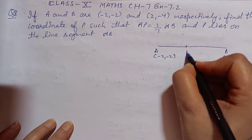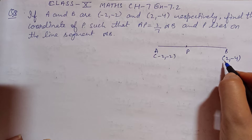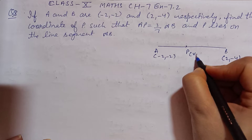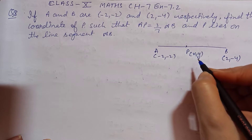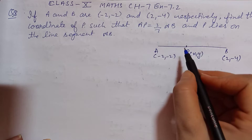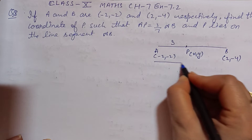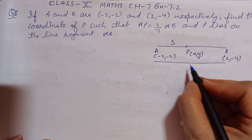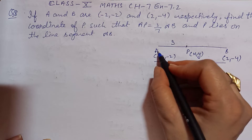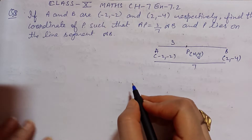Point P lies on the line segment AB. So P point coordinate is on the line segment — we let it be (X, Y) on the line. Now the ratio: AP is 3 parts of the total AB which is 7. So AP is 3 and PB can be found from the remaining portion.